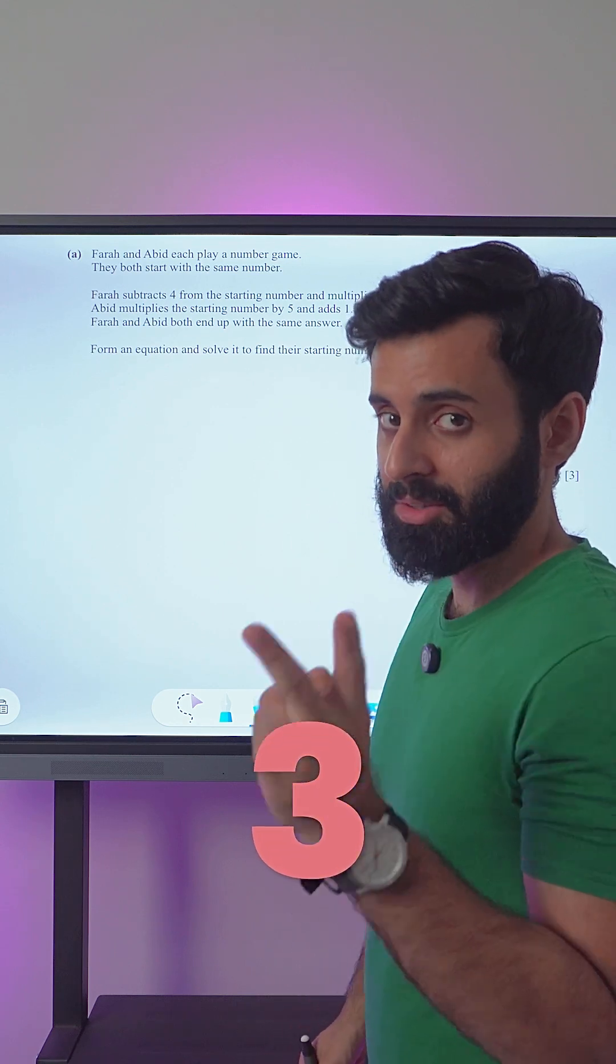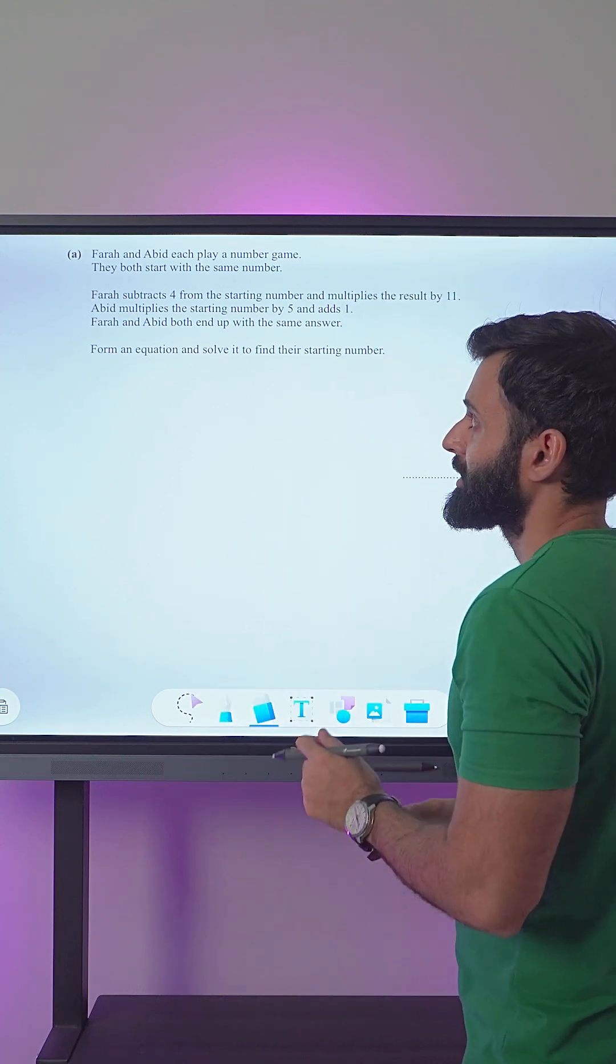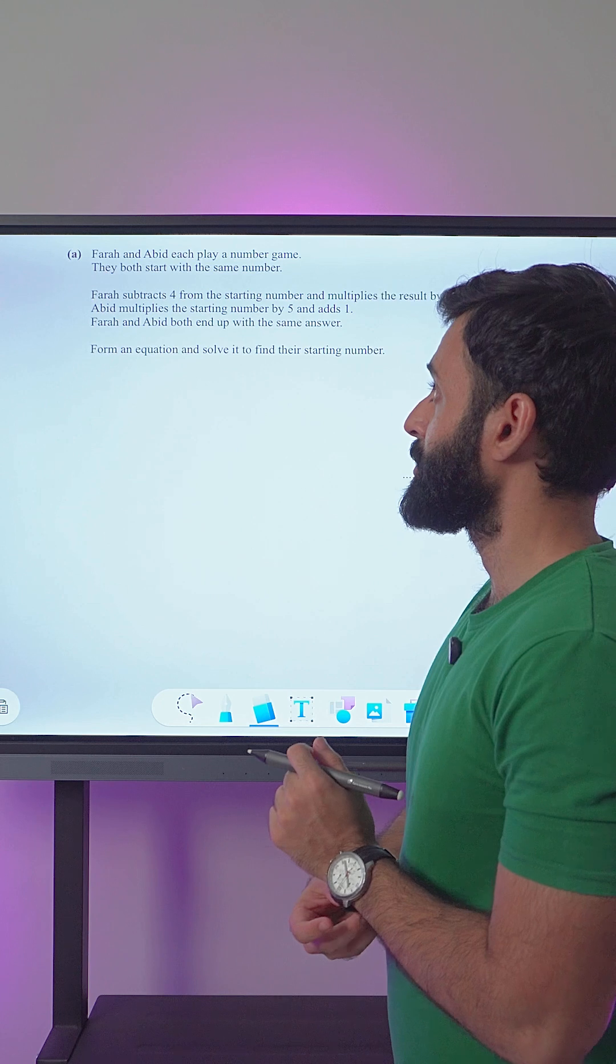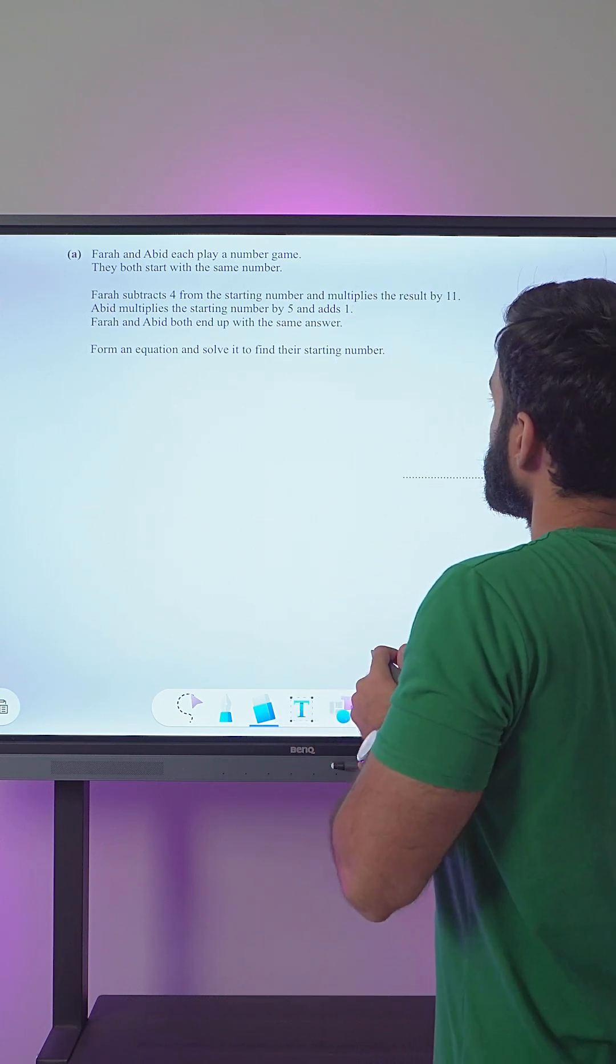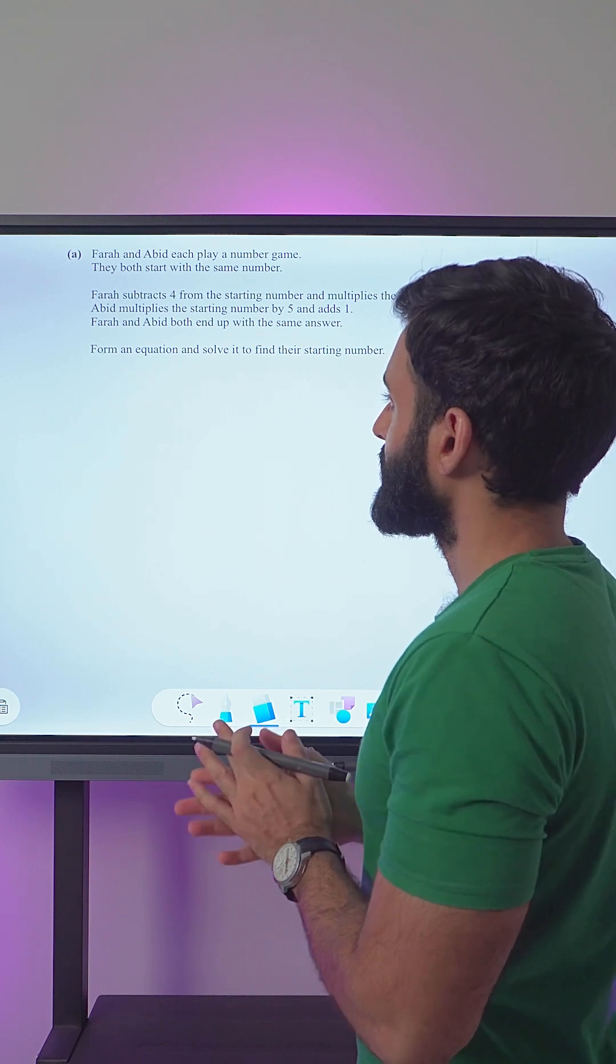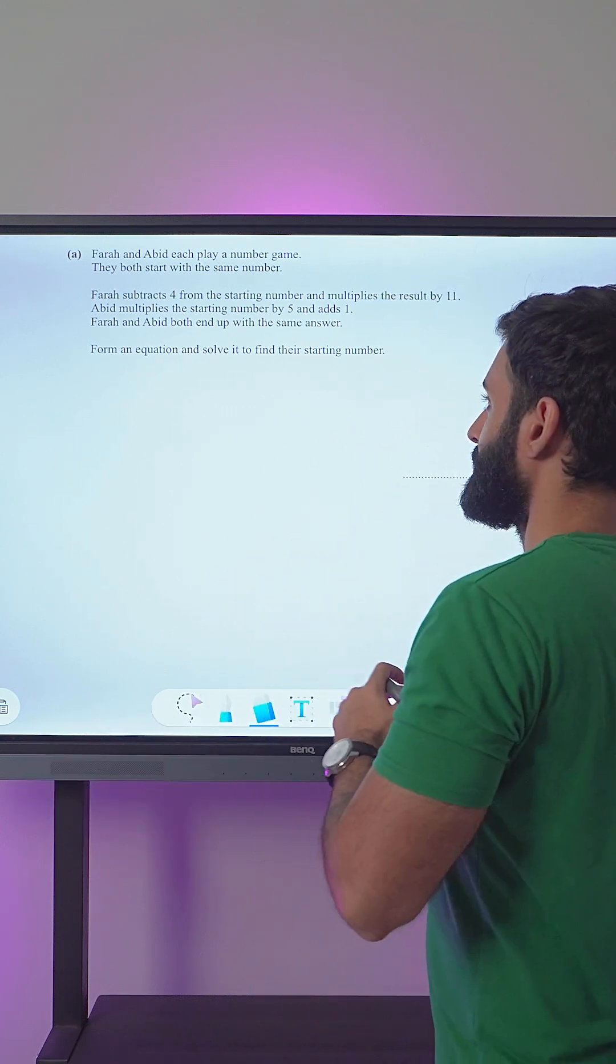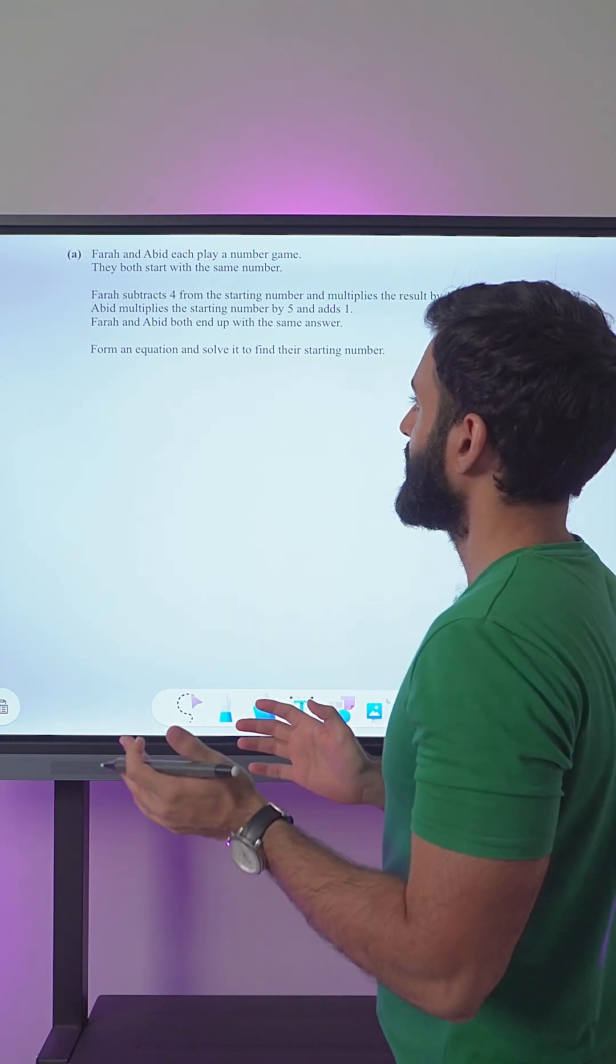Because I'm going to solve it in 3, 2, 1, let's go. So it says Farah and Abid each play a number game. They both start with the same number. Farah subtracts 4 from the starting number and multiplies the result by 11. Abid multiplies the starting number by 5 and then adds 1.